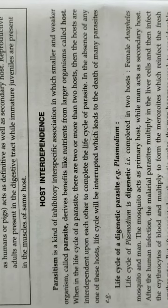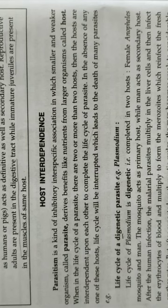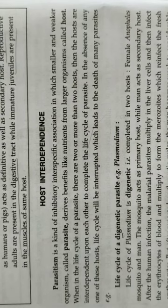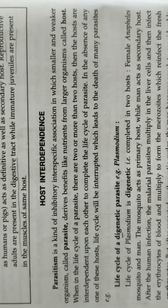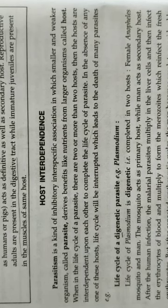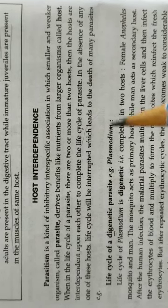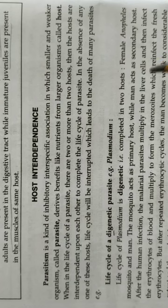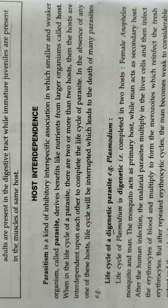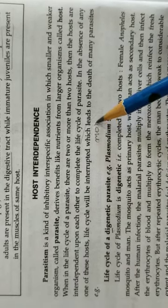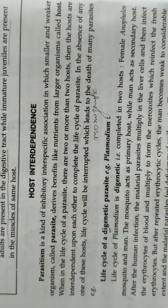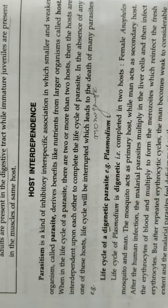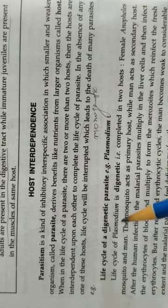As we have studied earlier, parasitism is a sort of interaction in which the smaller organism, called the parasite, derives various benefits such as nutrition, shelter, or protection from the larger organism, which is called the host. There are many examples of parasitism where not a single host is involved for the completion of the life cycle of the parasite. When a single host is involved, it is called a monogenetic life cycle. If two hosts are involved, it is called a digenetic parasite. If three hosts are involved, it is called a trigenetic parasite.